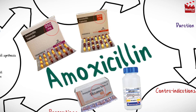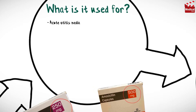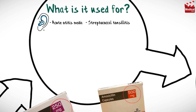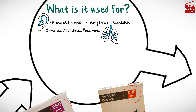It is also available as 125 mg per 5 mL powder for oral suspension, to be reconstituted with filtered water. Amoxicillin is used for acute otitis media, streptococcal tonsillitis, sinusitis, bronchitis, and pneumonia.